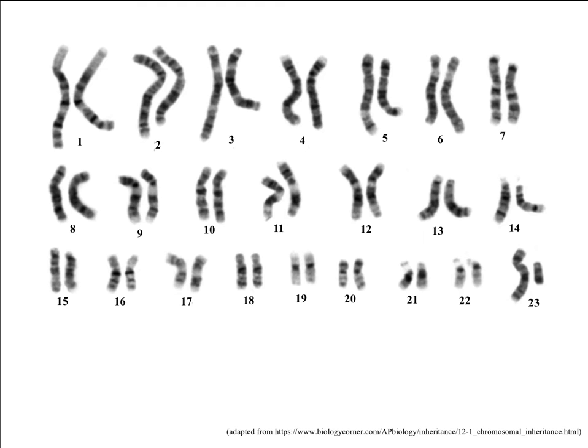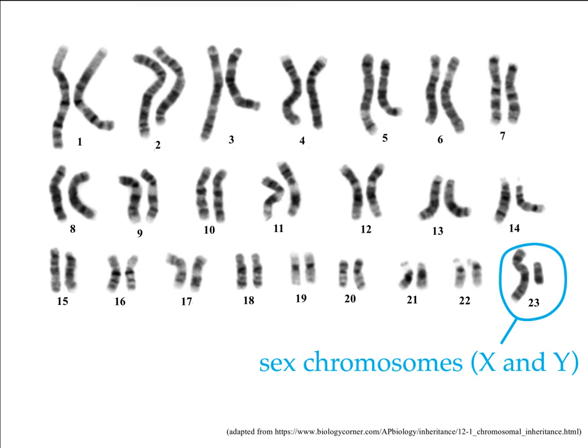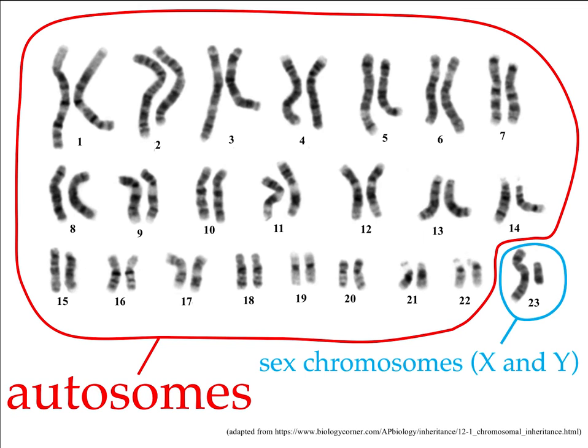Every person has 23 pairs of chromosomes. One pair consists of the sex chromosomes, called X and Y, which determine if a person is male (XY) or female (XX). The other 22 pairs are called autosomes, so your autosomal DNA comprises almost all of your DNA.